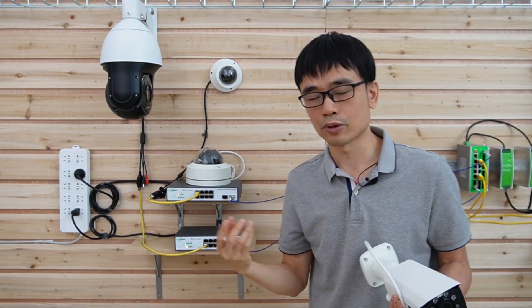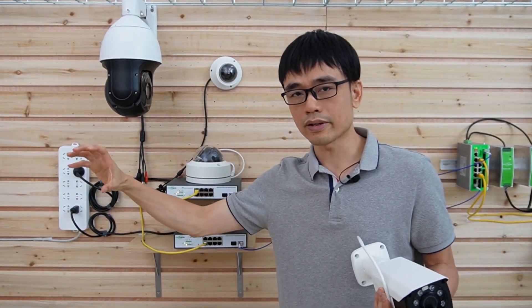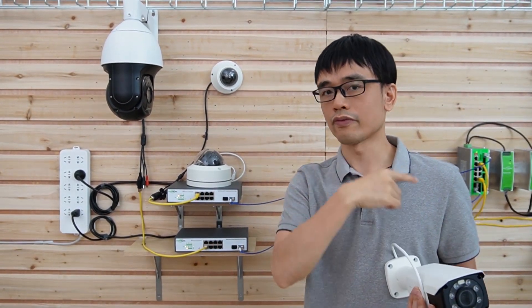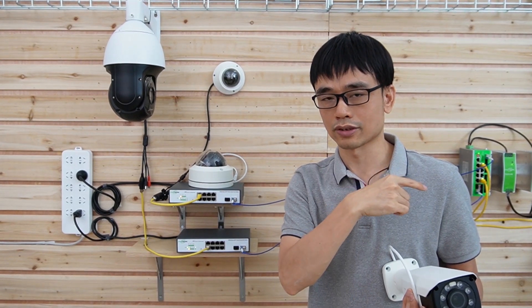But for this one, we got 30 times optical zoom. When we zoom in the camera, we can completely see the object like the facial details, the car plates, even for the scene we tested just now.